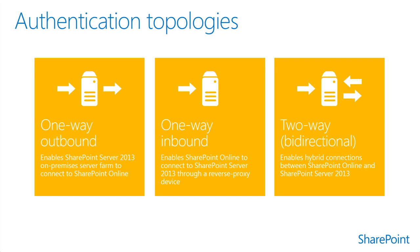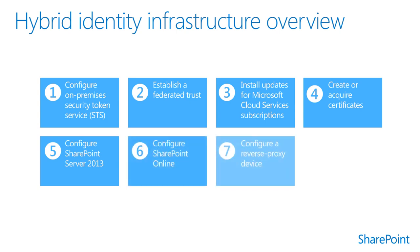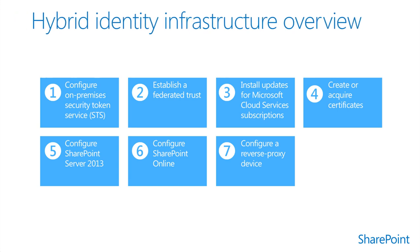With Business Connectivity Services from SharePoint Online, users can perform both read and write operations. The Business Connectivity Services service connects to an on-premises SharePoint Server 2013 farm, is configured on the on-premises farm, and brokers the connection to an on-premises OData service endpoint. It requires an app for SharePoint or an external list installed on the SharePoint Online site collection. Prior to deploying services to users, the identity infrastructure must be configured. There are seven basic steps: configuration of the on-premises security token service; establishing a federation trust; installing updates for cloud services subscriptions; creation of or acquiring certificates; configuring SharePoint Server 2013; configuring SharePoint Online; and configuring a reverse proxy device.